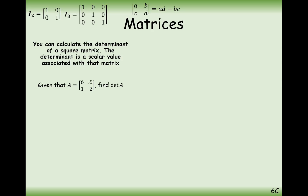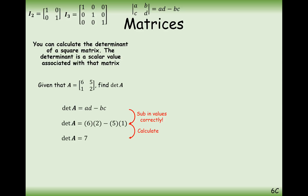Getting on to how we calculate the determinant. Calculate the determinant of matrix A: [6, 5, 1, 2]. Just apply the rule: 6 times 2 take away 5 times 1. That's 12 take away 5 equals 7. So the determinant of matrix A is 7.